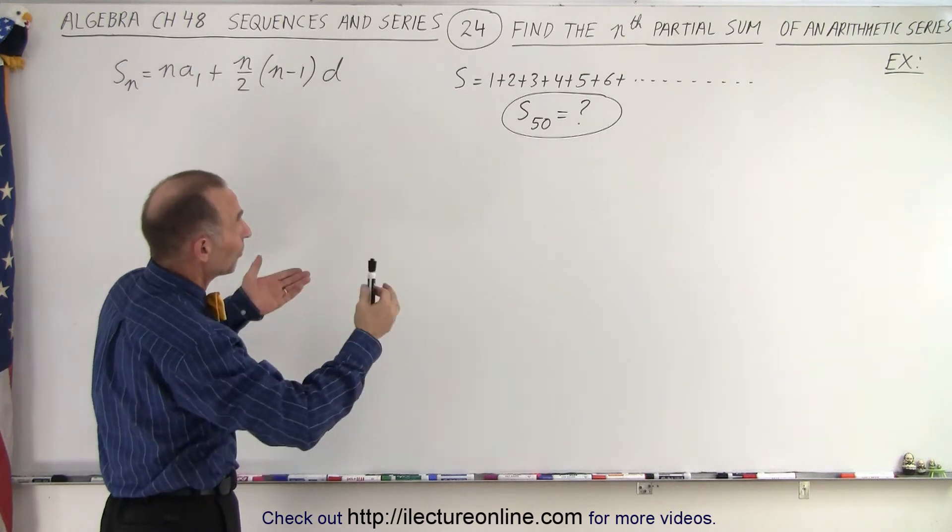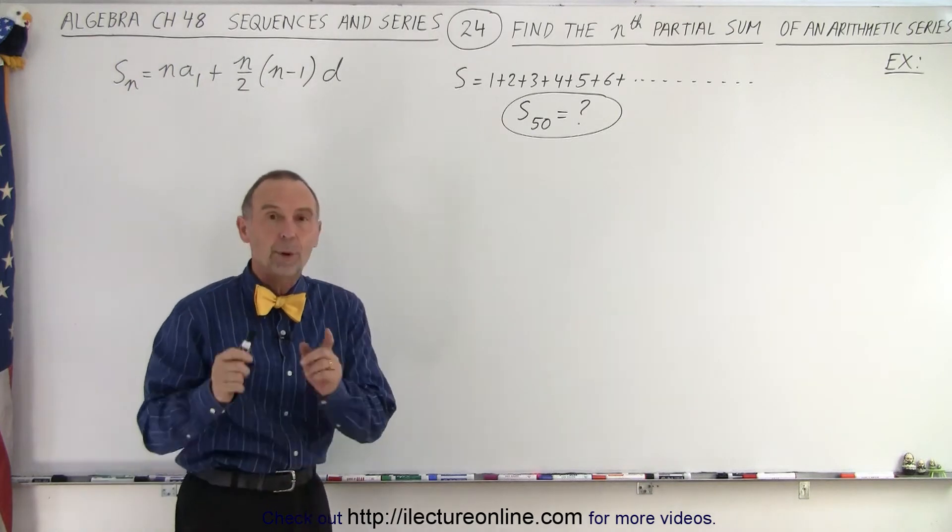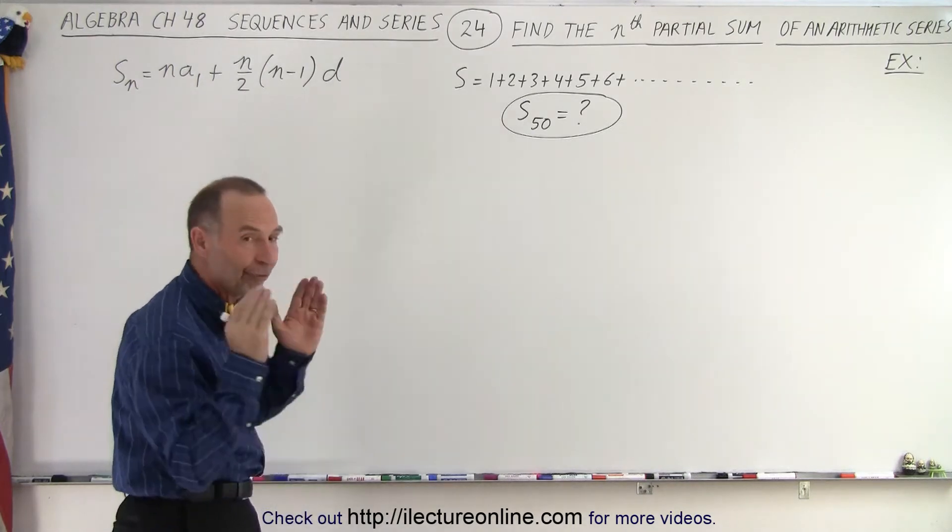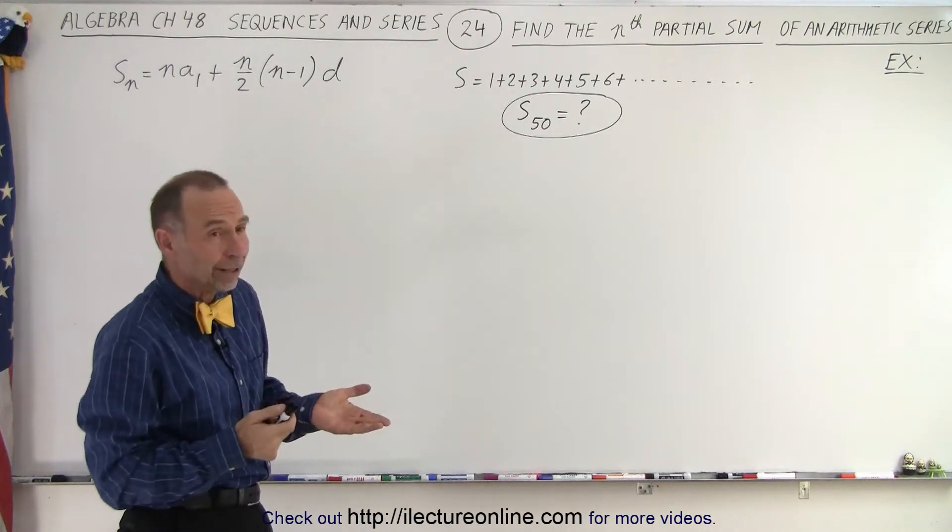Let's say we have the simple series of 1 plus 2 plus 3 plus 4 plus 5 all the way out to infinity, and we want to know the partial sum for the first 50 terms, S sub 50. How do we do that?